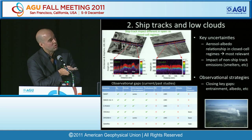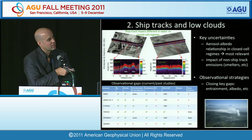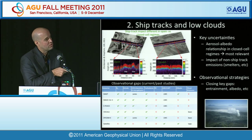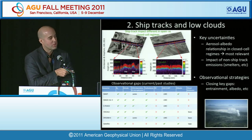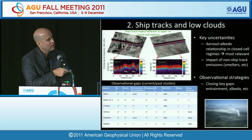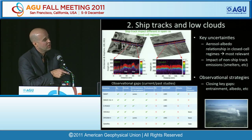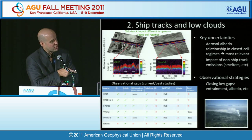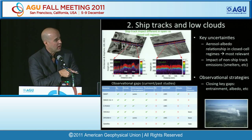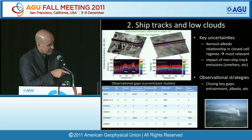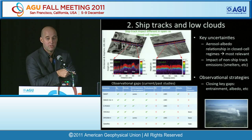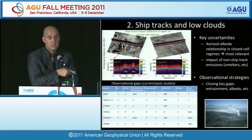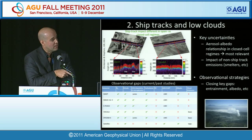The second thrust is on ship tracks and other emissions. A key uncertainty is the aerosol-albedo relationship in closed cell regimes, which is most relevant because that's where most clouds are and most potential for significantly changing albedo exists. A recent paper by Graham Stevens showed definite impact in open cells but it's hard to find evidence in closed cell regimes. It's probably not sufficient just to study ship track emissions — we should also look at effects from smelters and other anthropogenic emissions on aerosol-albedo.